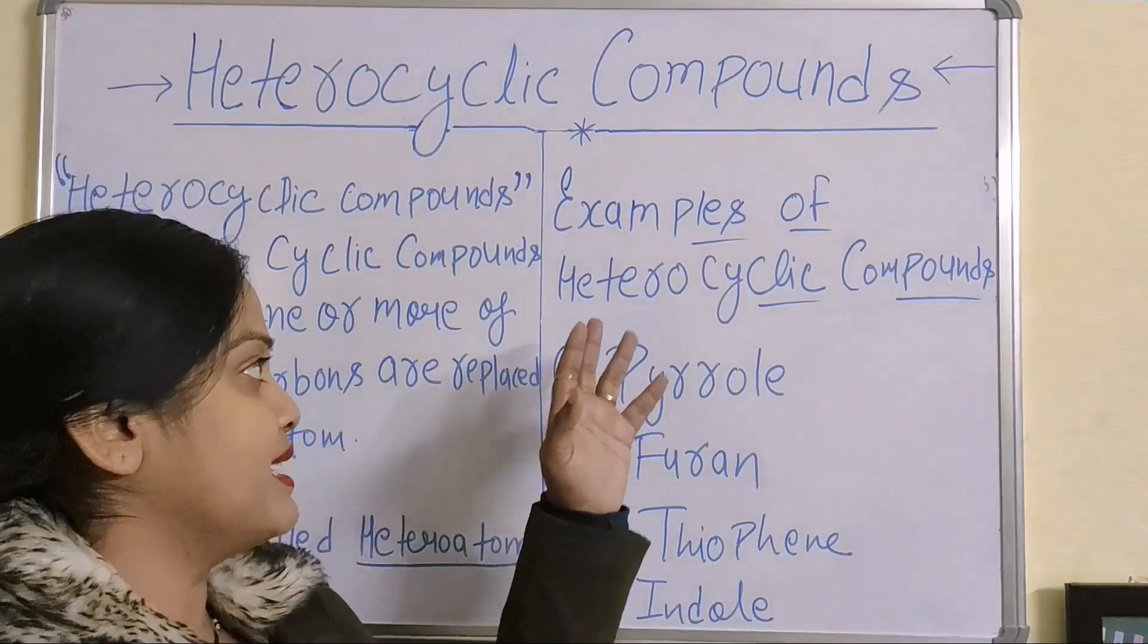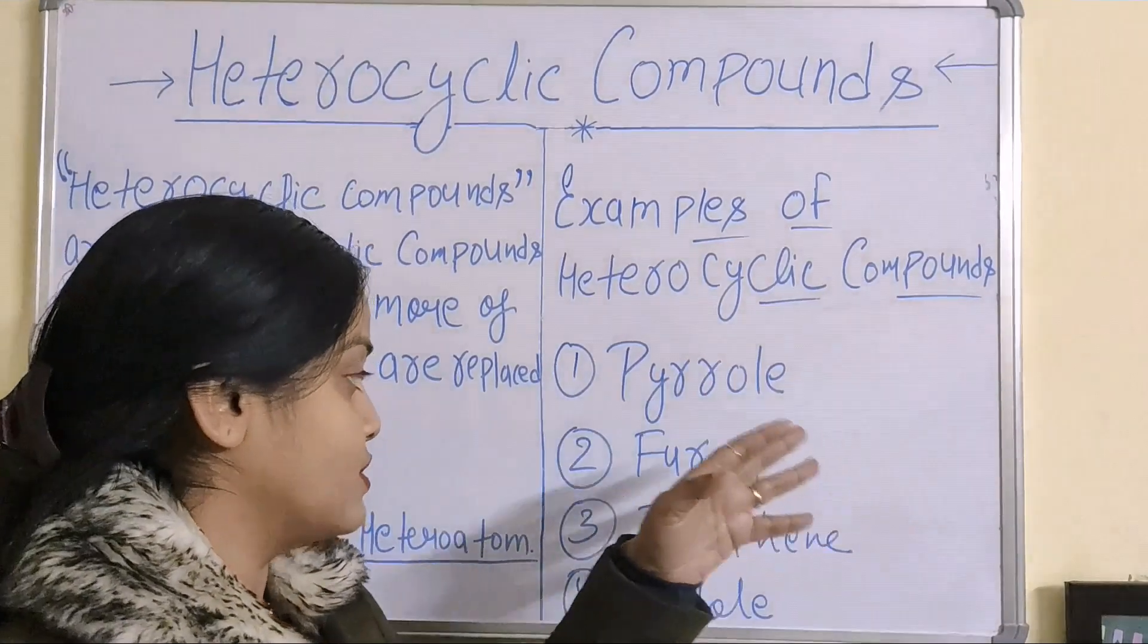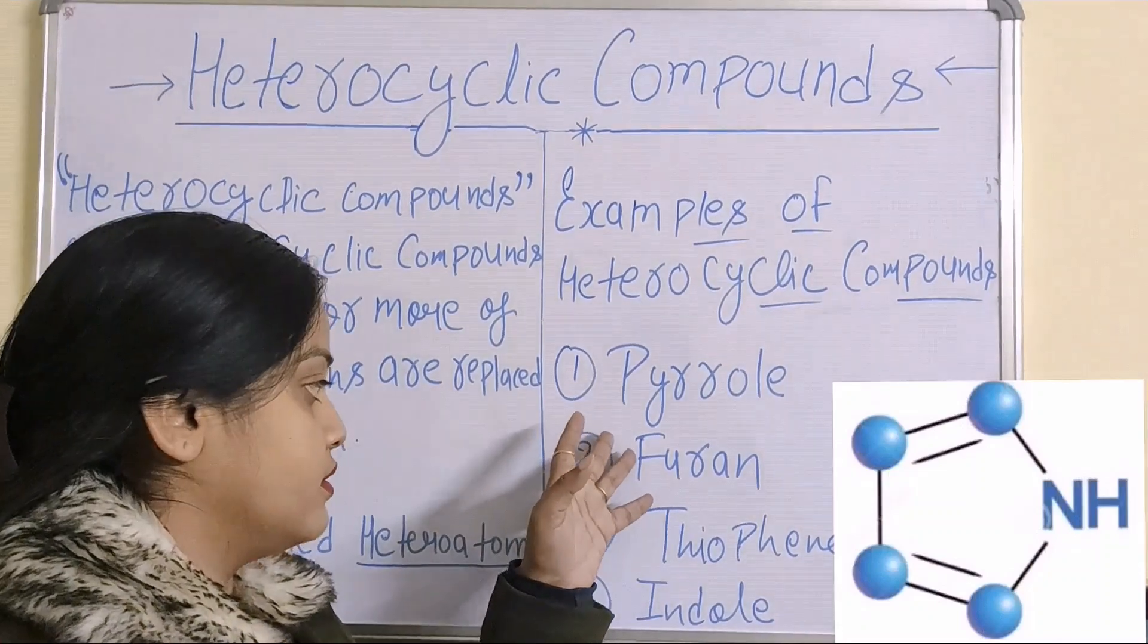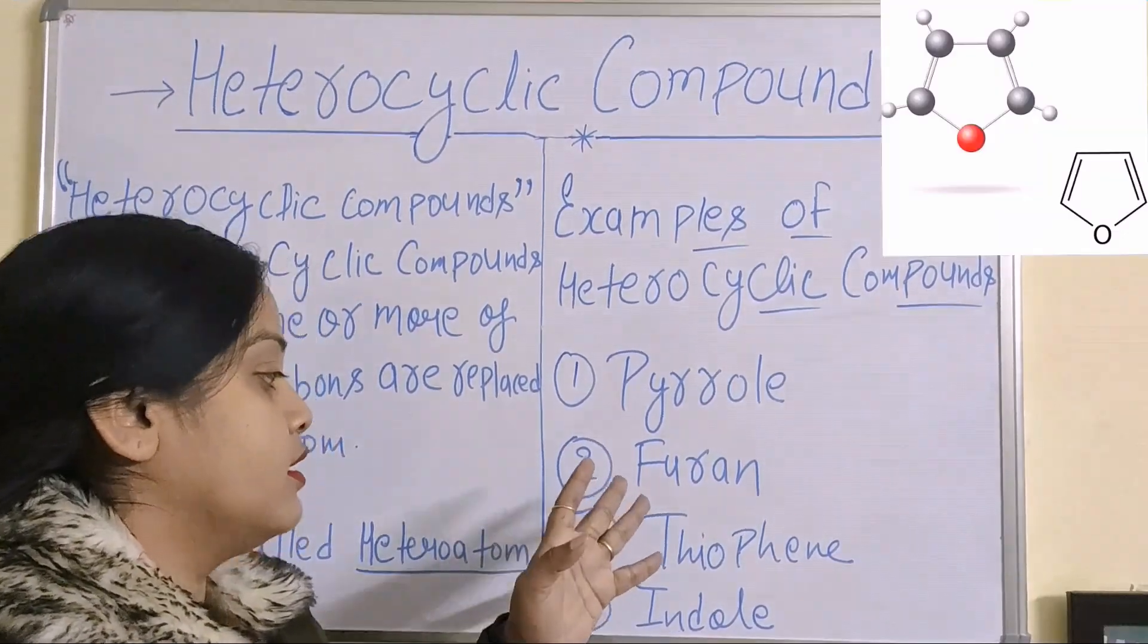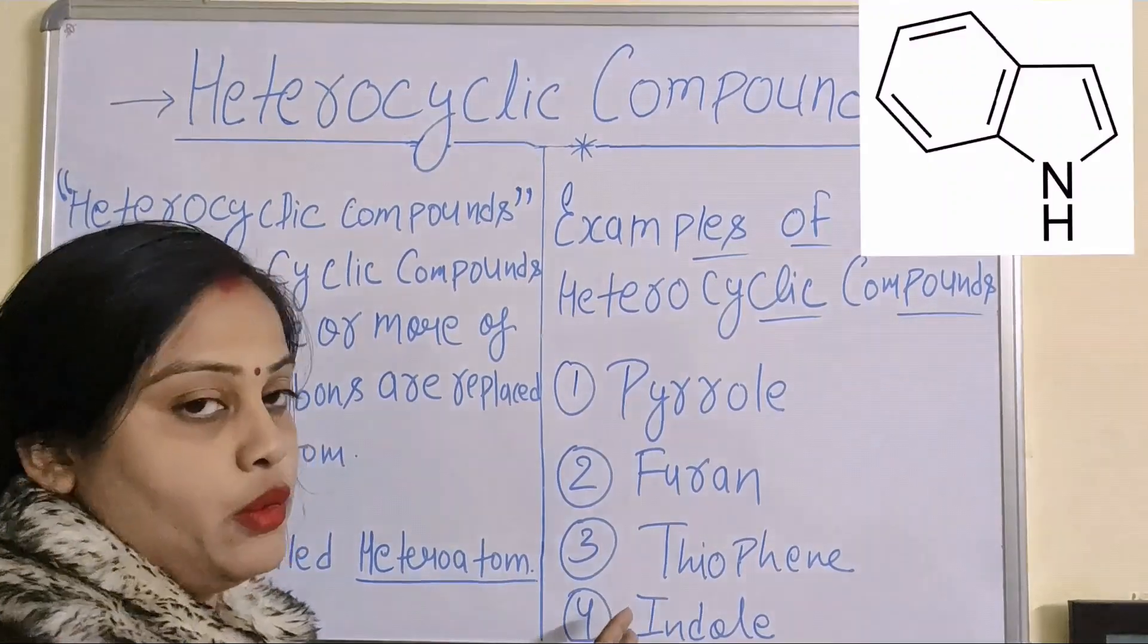The most common examples of heterocyclic compounds are pyrrole, furan, thiophene and indole.